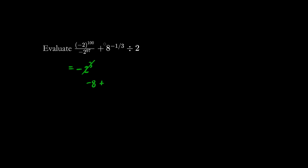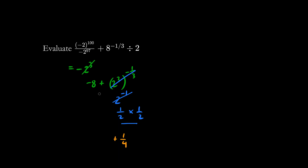Here we're adding 2 cubed, which is 8, to the negative one-third power. We multiply these: we have 2 to the negative 1, which means 1 over 2, all divided by 2 — the same thing as multiplied by the reciprocal. BEDMAS says we multiply first. So we have 1 fourth, positive, added with negative 8, which gives negative 32 over 4. The final answer is negative 31 over 4.